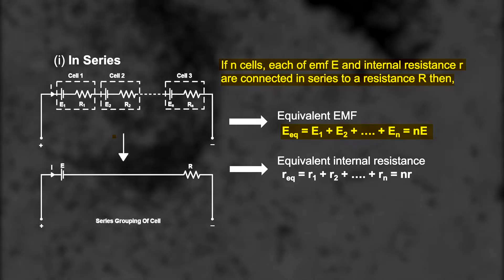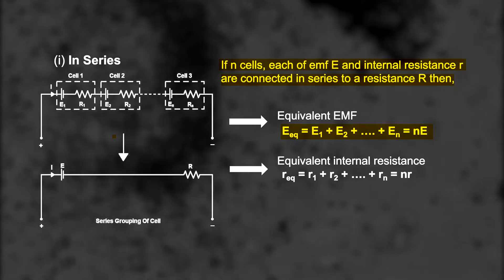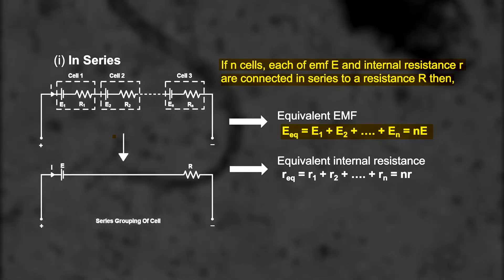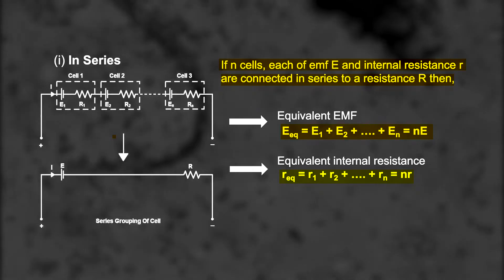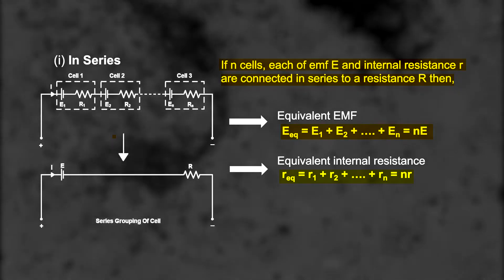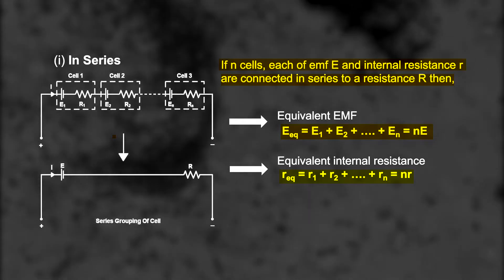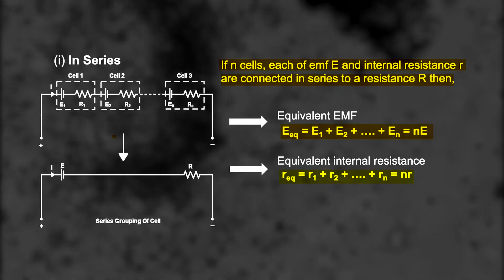The equivalent internal resistance, or the total internal resistance: R_eq = R1 + R2 + ... + Rn, which comes out to be n times r.